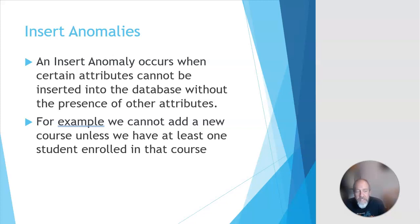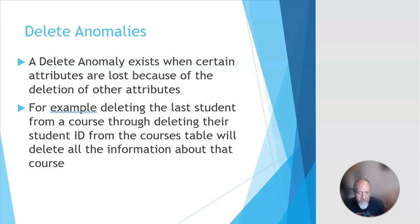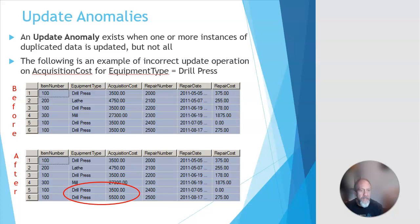You also have deletion anomalies — in that table, if you deleted the last student, you also deleted the course. The course no longer exists. And update anomalies: suppose you want to change the acquisition cost of the drill press. The drill press appears in the table two times. Every time the drill press gets repaired, the cost of acquiring it needs to be added to the table, and if it changes in one place it has to change everywhere, otherwise you've got multiple values for it. Bad design. Let's fix it.